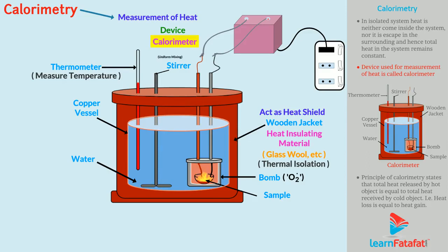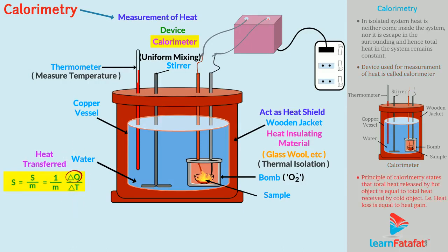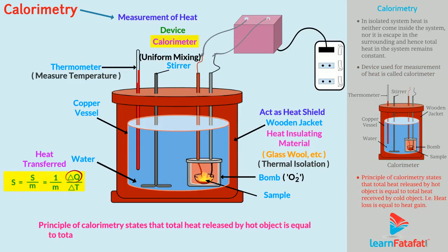Heat released by the sample gets absorbed by the water and the copper vessel. A stirrer is used for uniform mixing of heat. As a result, there is a temperature rise shown in the thermometer. With the formula of specific heat capacity, it is possible to find the heat transferred in the system. Thus, the principle of calorimetry states that total heat released by a hot object is equal to total heat received by a cold object — that is, heat loss is equal to heat gain.